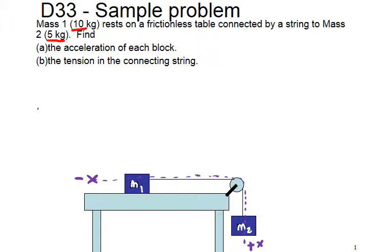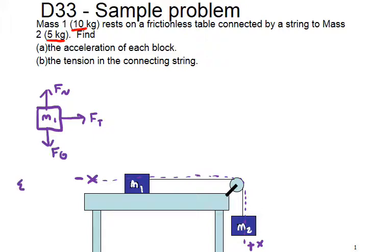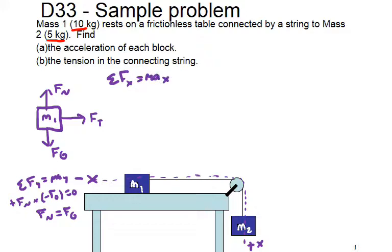What we're going to want to do first is draw out the free body diagram of each mass separately. For mass one, we have tension pulling this way, the table applying a normal force, and the force of gravity downwards. Looking at the forces in the y-direction, they're balanced: normal force plus negative force of gravity equals zero. The only unbalanced force is tension, so the sum of forces in x equals m1 times a in the x.